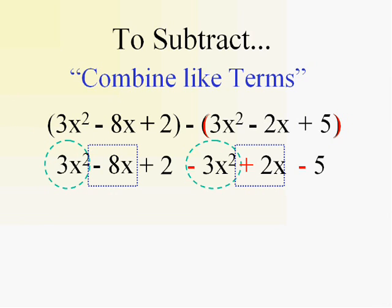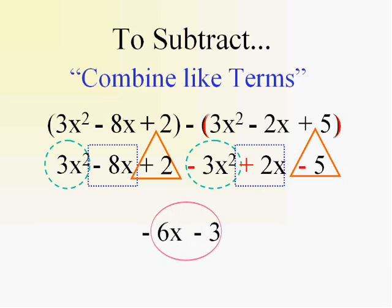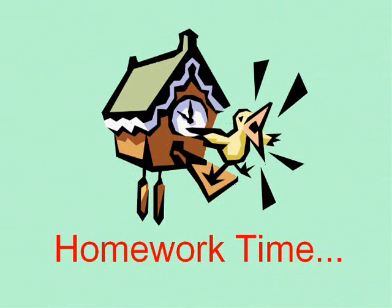Negative 8x and positive 2x is negative 6x. And positive 2 and negative 5 is a negative 3. And you got it. Okay, let's practice it. Get to that homework.